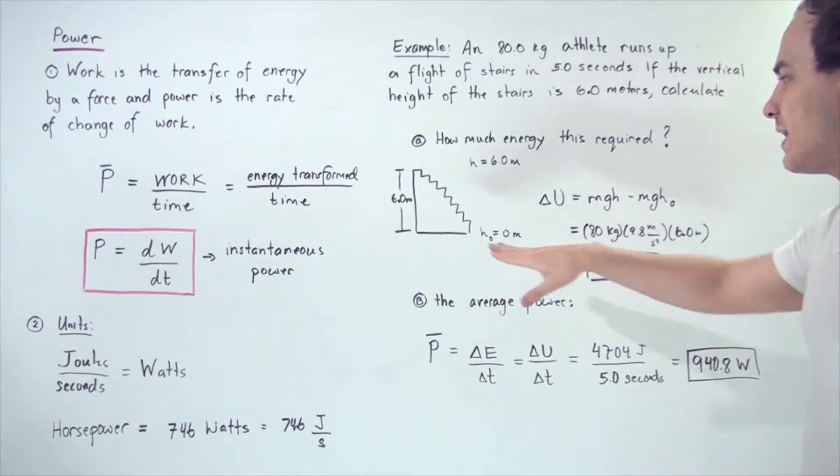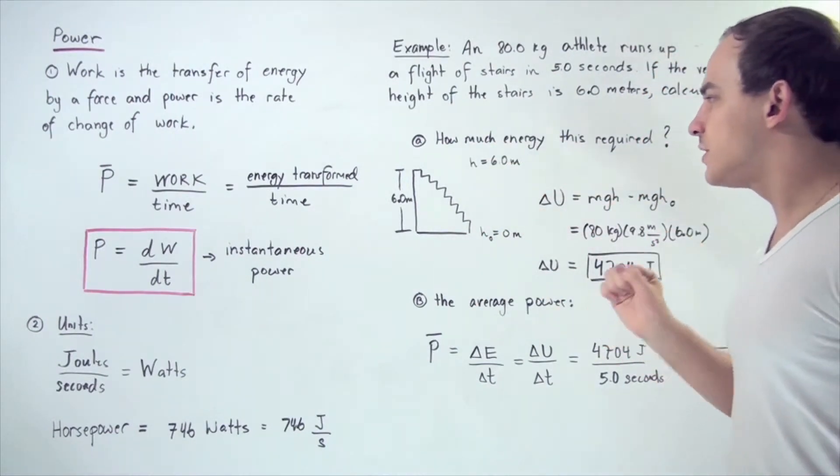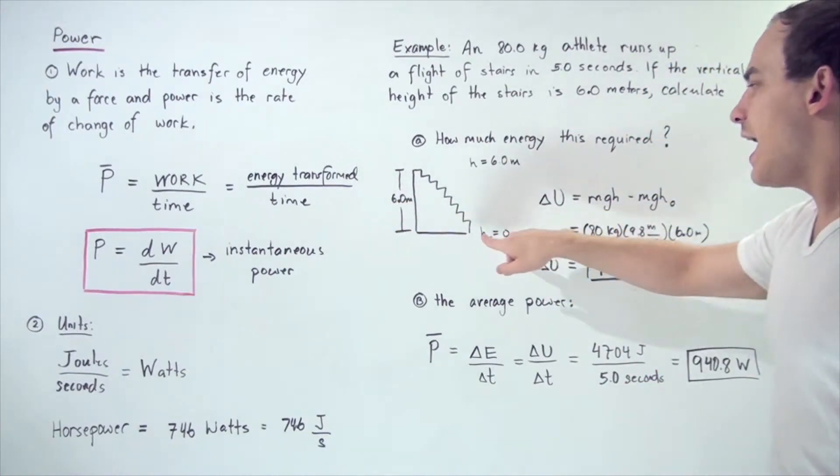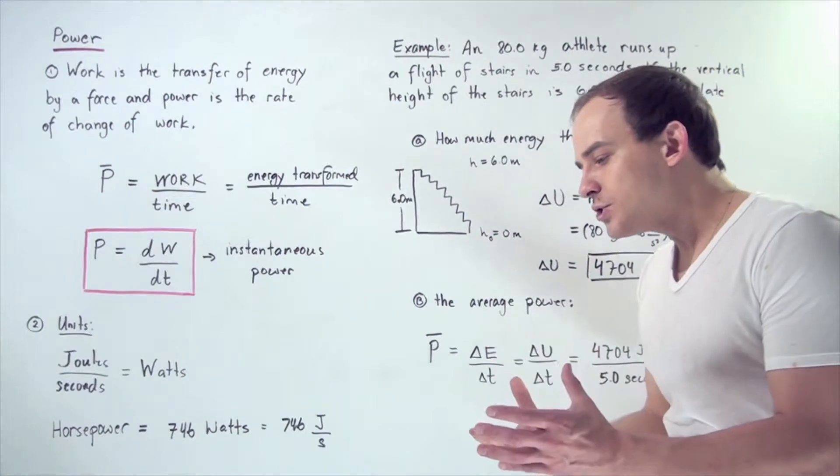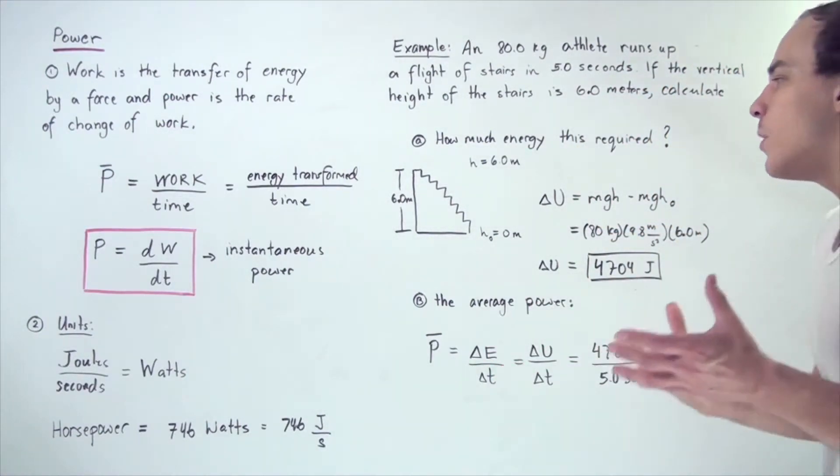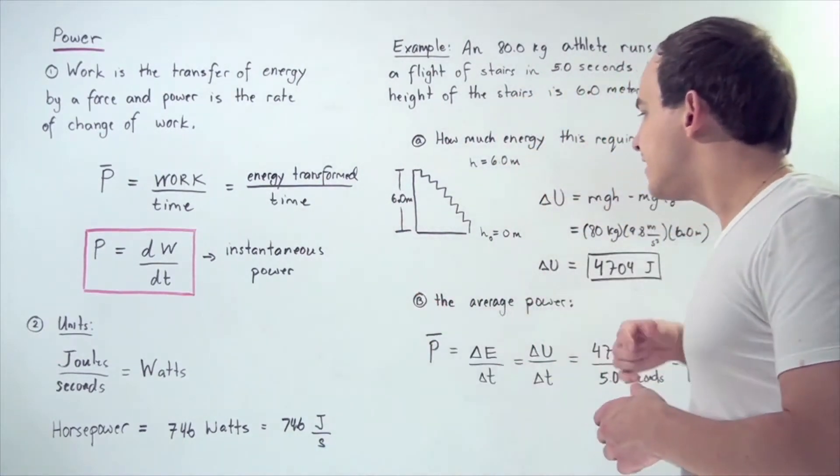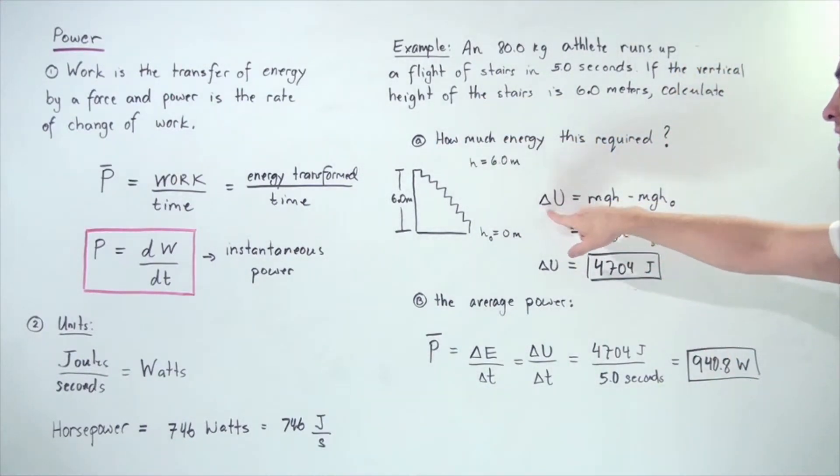Let's look at A and the diagram. We have our staircase that has a vertical distance of 6 meters. Let's choose the ground to be H naught equals 0 meters, and the final height is 6 meters. Our person changes their gravitational potential energy. The change in gravitational potential energy is equal to MGH minus MGH naught.